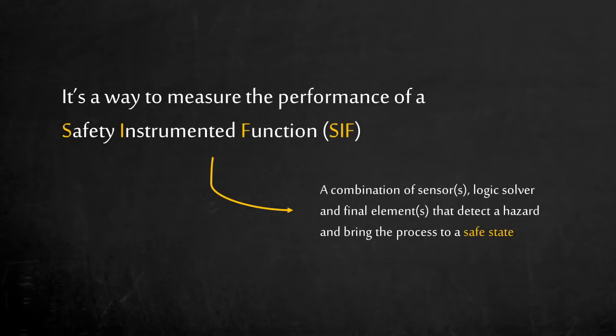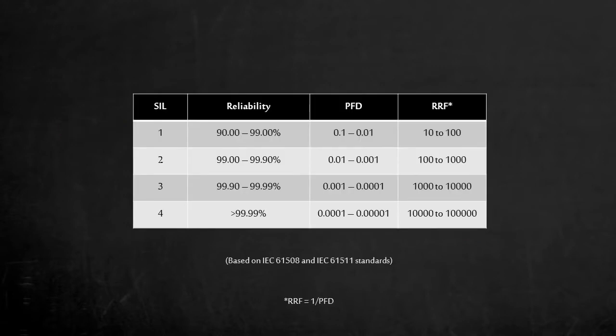SIL describes the ability to reduce risk. Safety Integrity Level of a Safety Instrumented Function defines a reliability range. This reliability range can be expressed as a probability of failure on demand (PFD), or as a risk reduction factor, which is the inverse of the PFD.